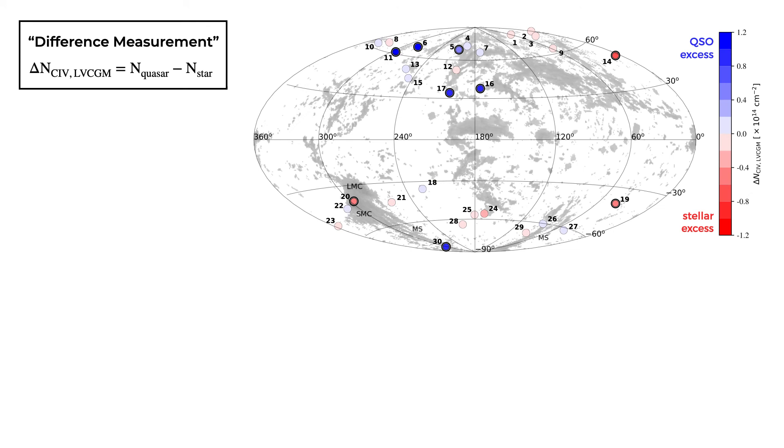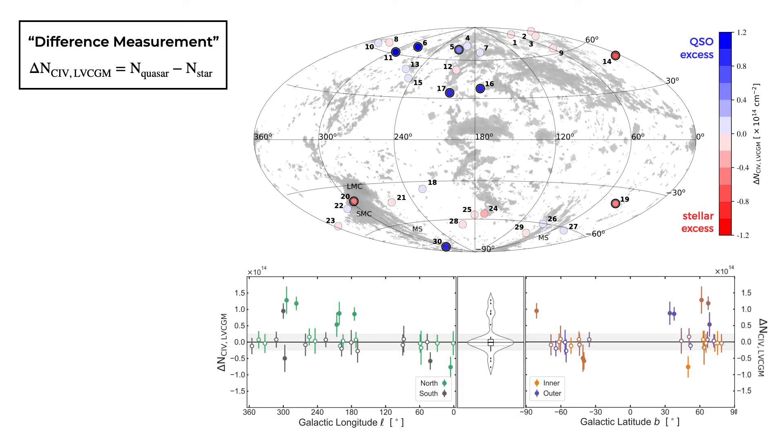Here's what our difference measurements look like plotted in projection on the sky. Blue markers represent a positive difference measurement, or excess absorption along the quasar sightline, and red markers represent a negative difference measurement, or excess absorption along the stellar sightline. On the bottom, the same difference measurements are plotted against galactic longitude and latitude, and their distribution is shown in the middle. The gray shading shows the median sensitivity limit for these difference measurements.